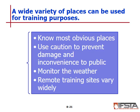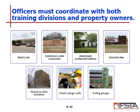At the company level, coordinate all training with the training division and obtain written permission to use private property. Training sites can include subdivisions under construction for building construction familiarization, structures under demolition, abandoned or condemned buildings, and industrial sites. It doesn't all have to be hands-on; for example, viewing construction sites helps familiarize personnel with structures in their response area.